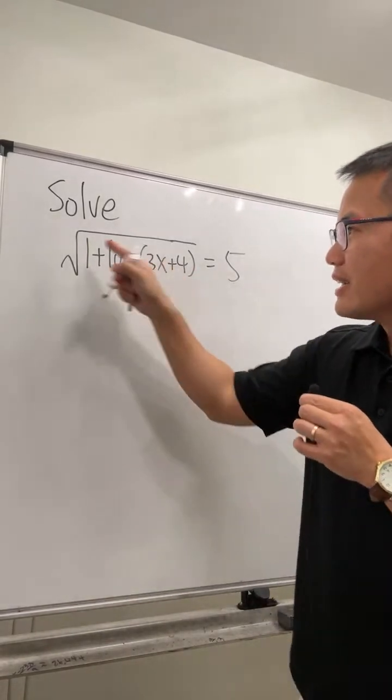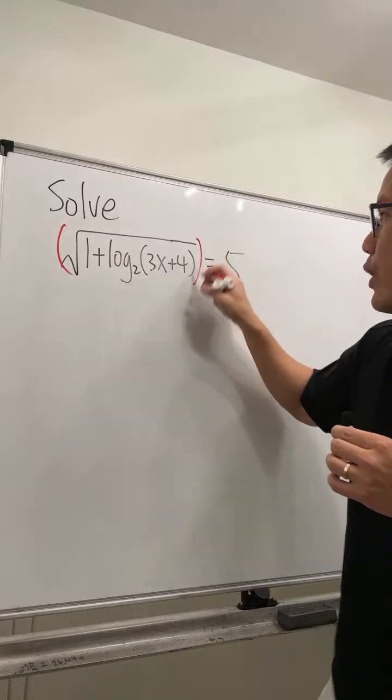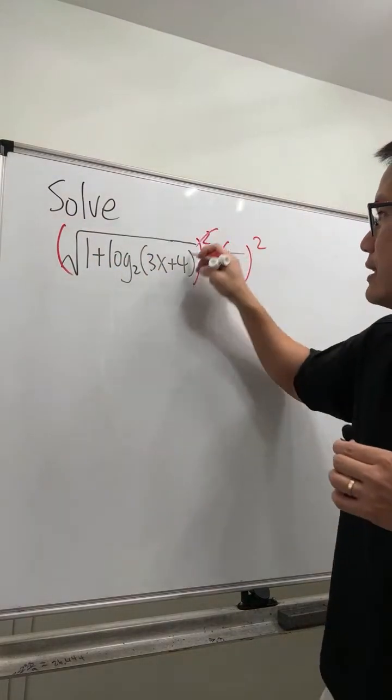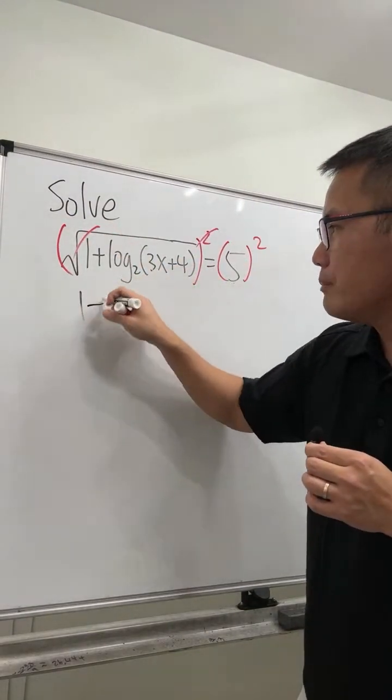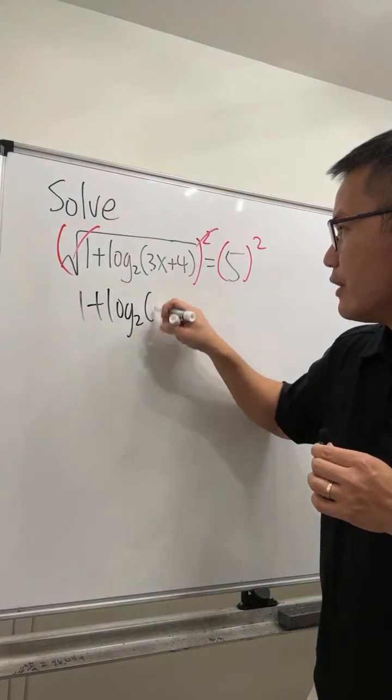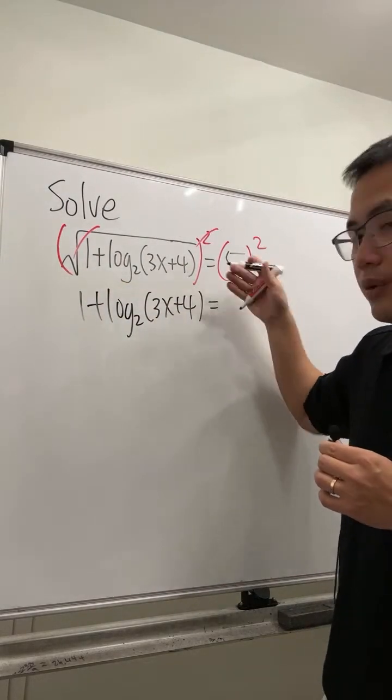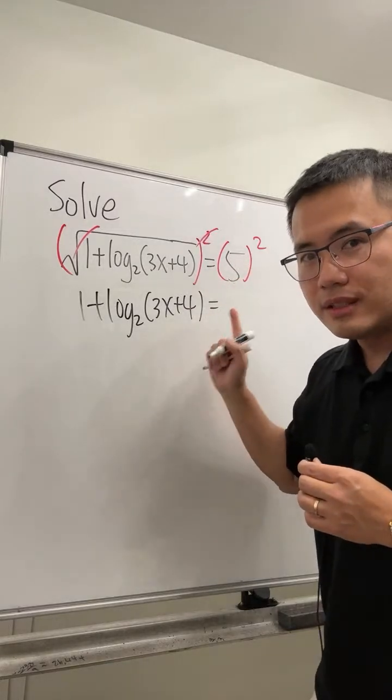Let's get rid of the square root first by squaring both sides. This and that will cancel, so we get 1 plus log base 2 of 3x plus 4, and that's equal to 5 squared. It's not 10, it's 25.